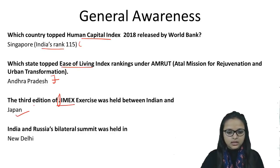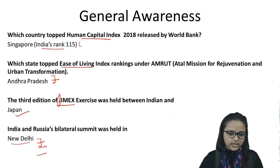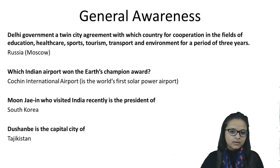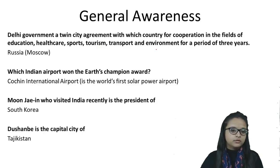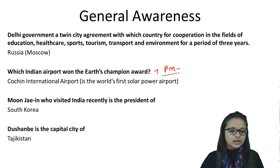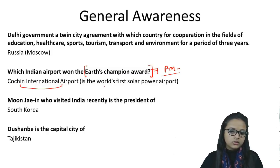India and Russia's bilateral summit was held in New Delhi. Delhi signed a Twin City Agreement with Moscow — a Memorandum of Understanding to cooperate in education, healthcare, sports, tourism, transport, and environment for a period of three years. Champions of Earth Award: our Prime Minister Narendra Modi won this award, and Cochin International Airport won the Champions of Earth Award for being the first solar-powered airport.